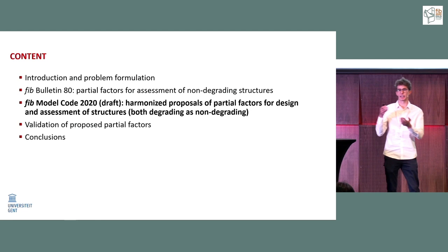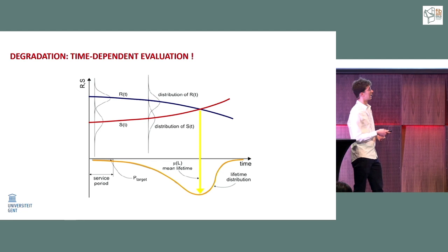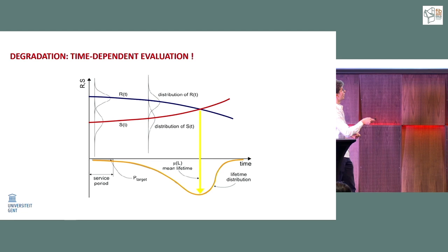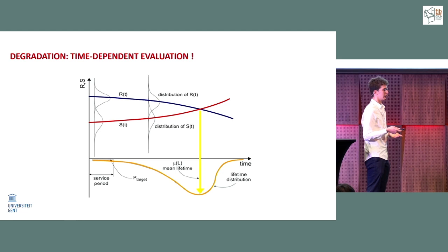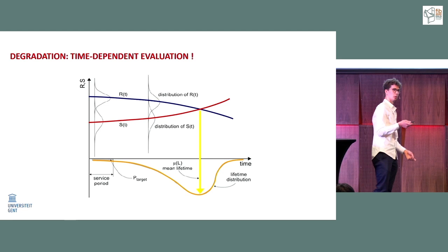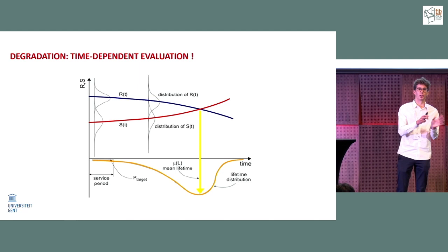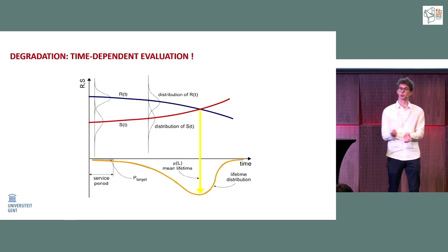This changes for a degrading structure, where resistance decreases over time. If we compare the 50-year critical load against the resistance at the end of the lifetime, we are implicitly assuming the critical load occurs at the very last instant of the structure's life — which will probably not happen. This makes the design overly conservative, so a new approach is needed.